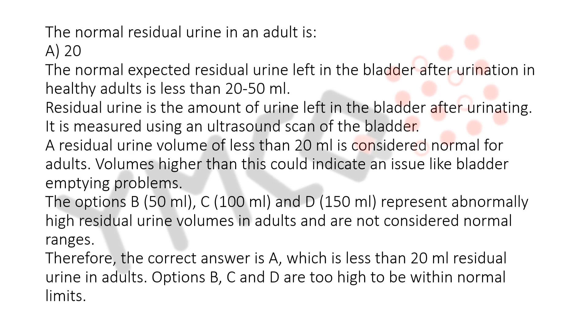Volumes higher than this could indicate an issue like bladder emptying problems. The options B. 50 milliliters, C. 100 milliliters, and D. 150 milliliters represent abnormally high residual urine volumes in adults and are not considered normal ranges.